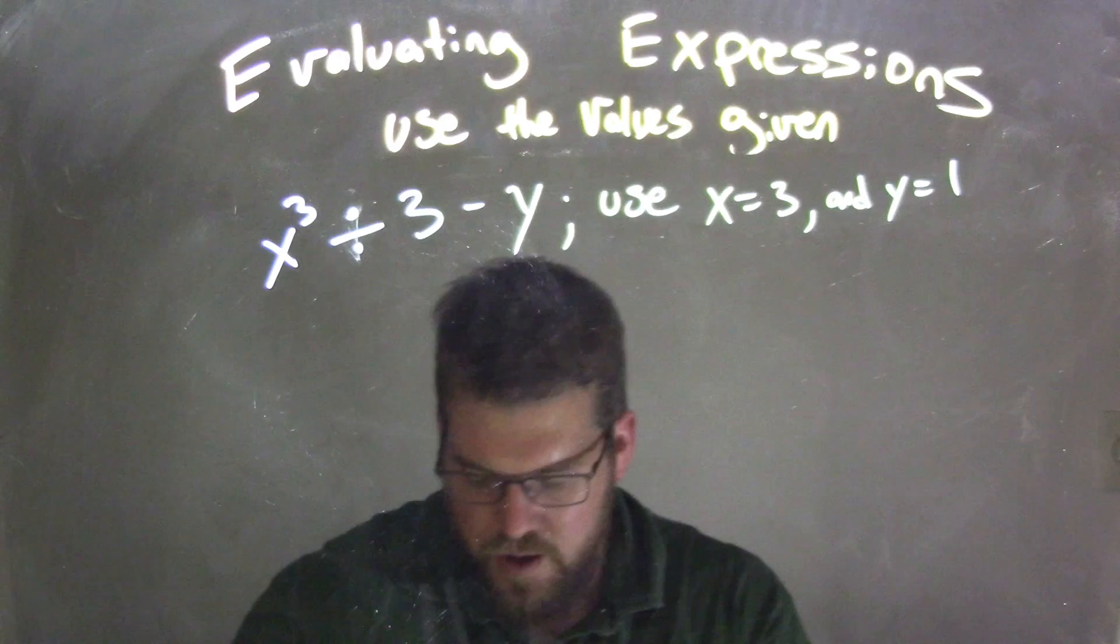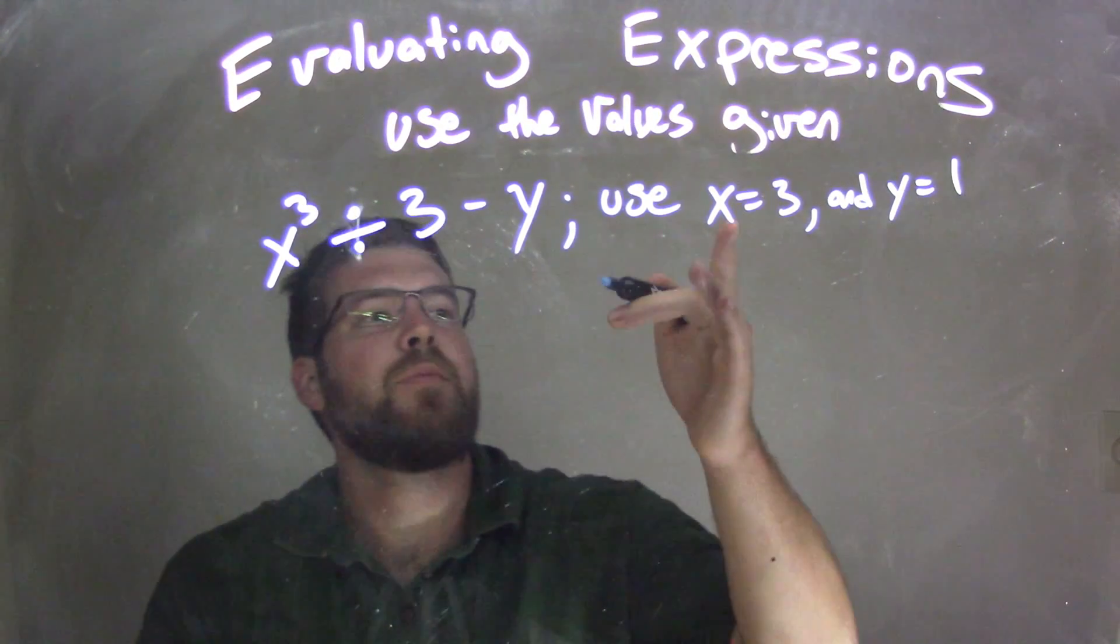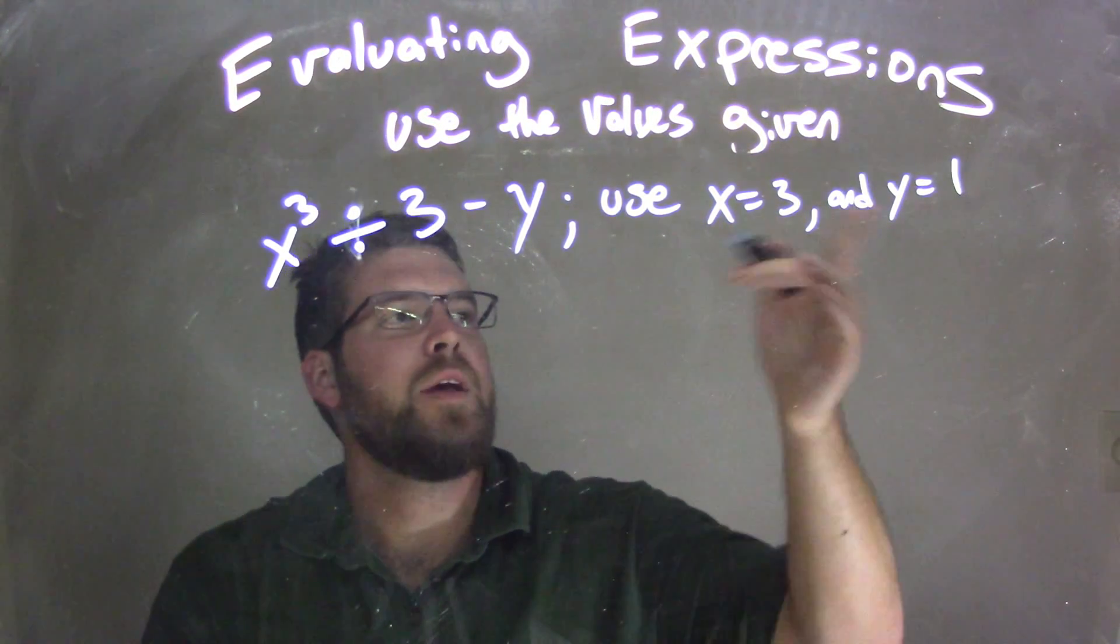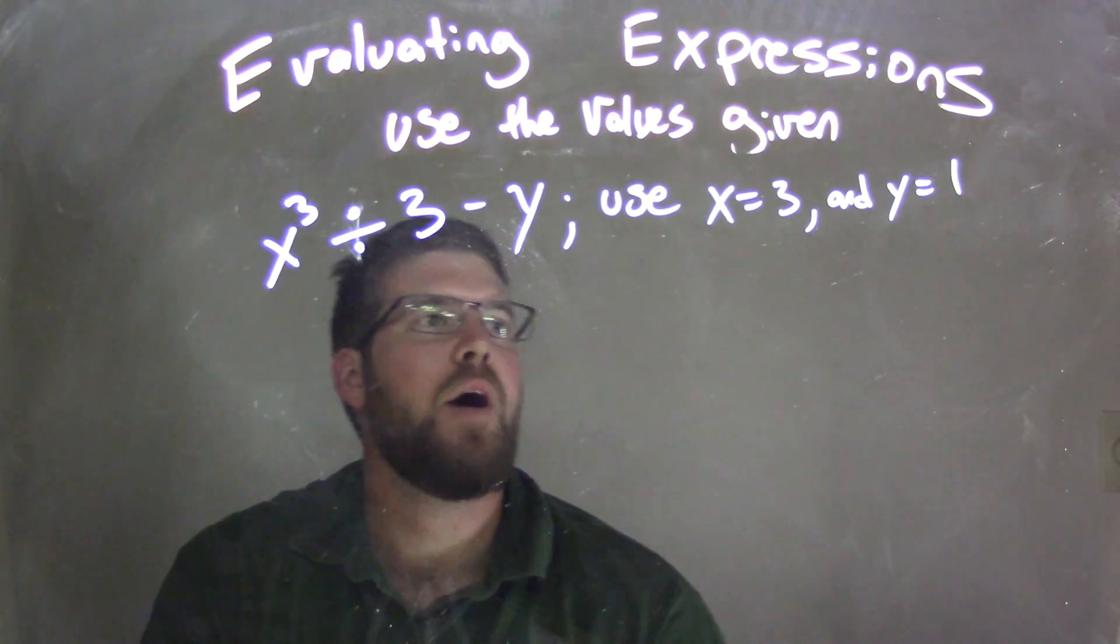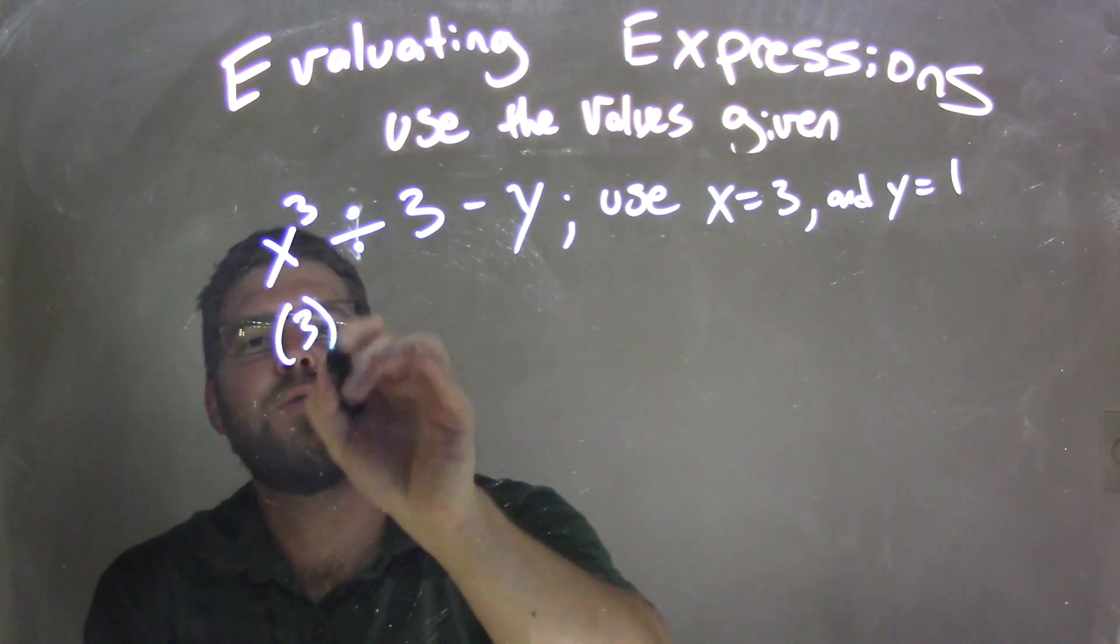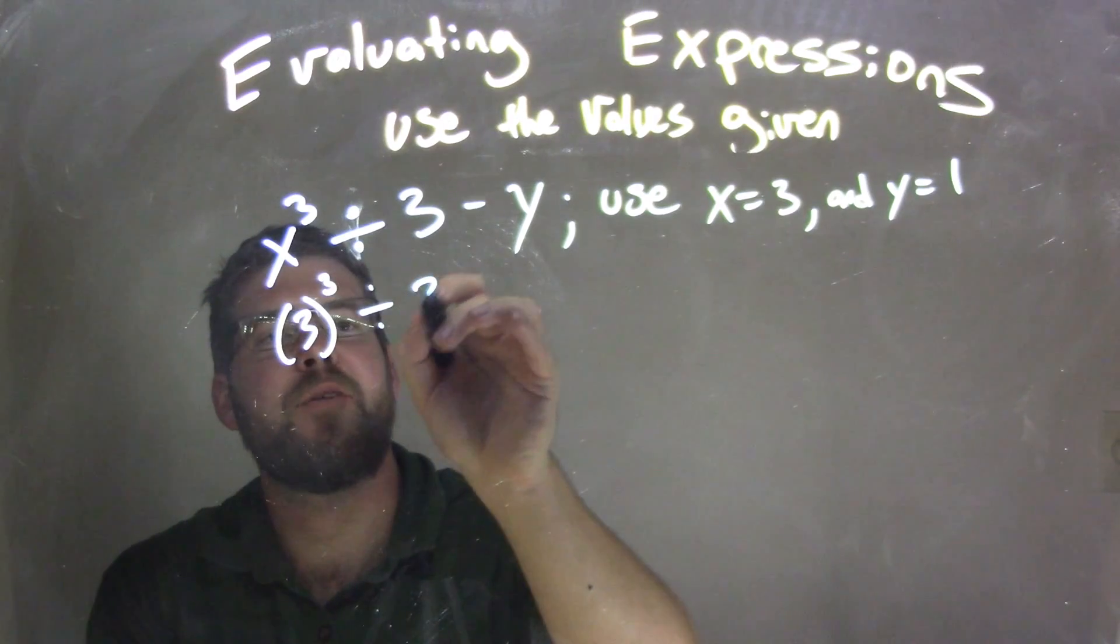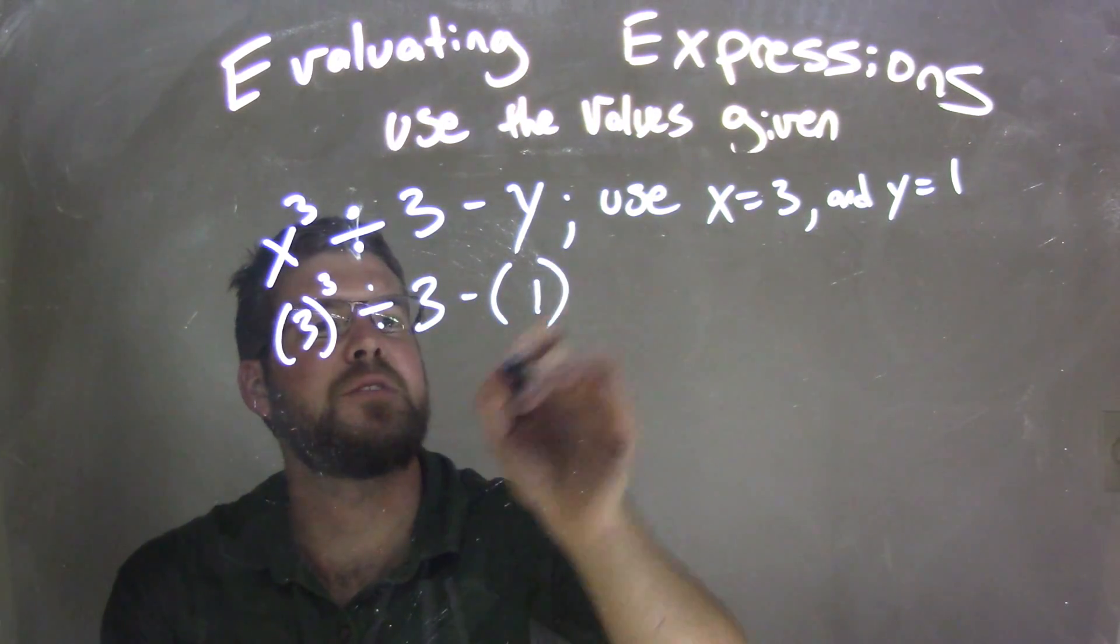So x to the third divided by 3 minus y. We need to substitute variables here - x is 3 and y is 1 into our expression. Well, x is 3, so we have 3 to the third power divided by 3 minus y, which is 1.